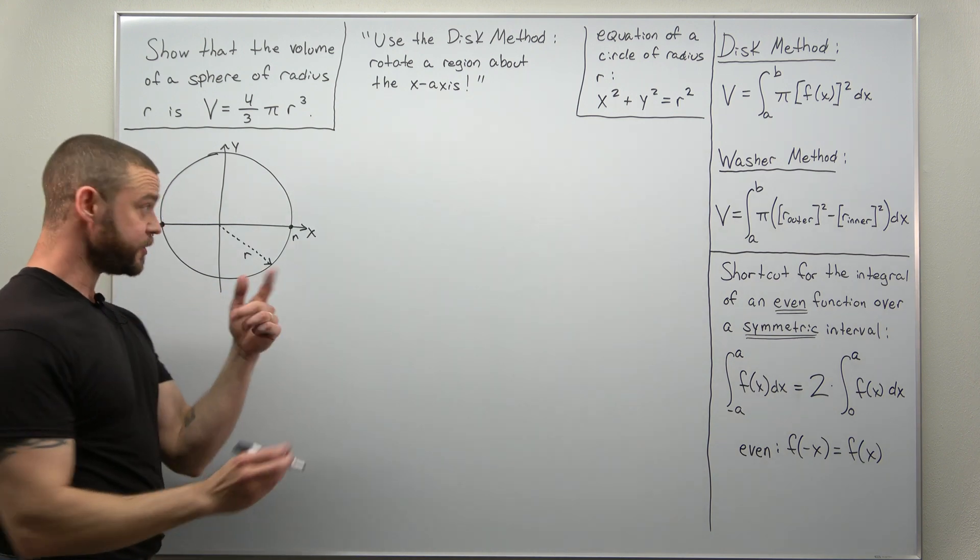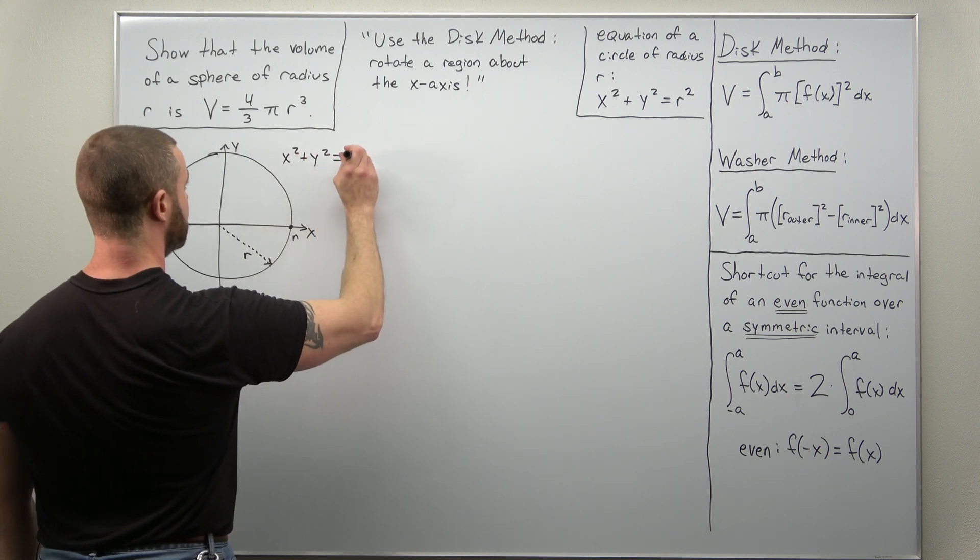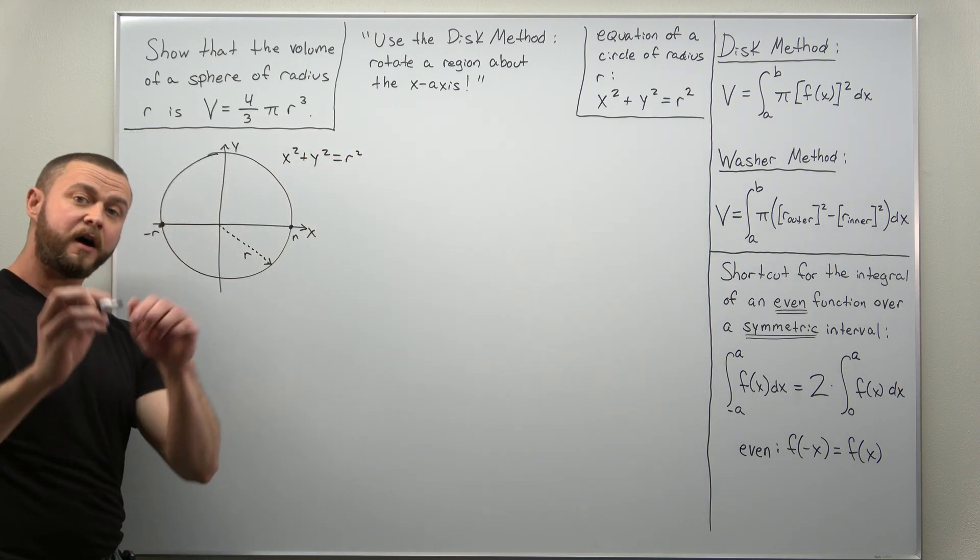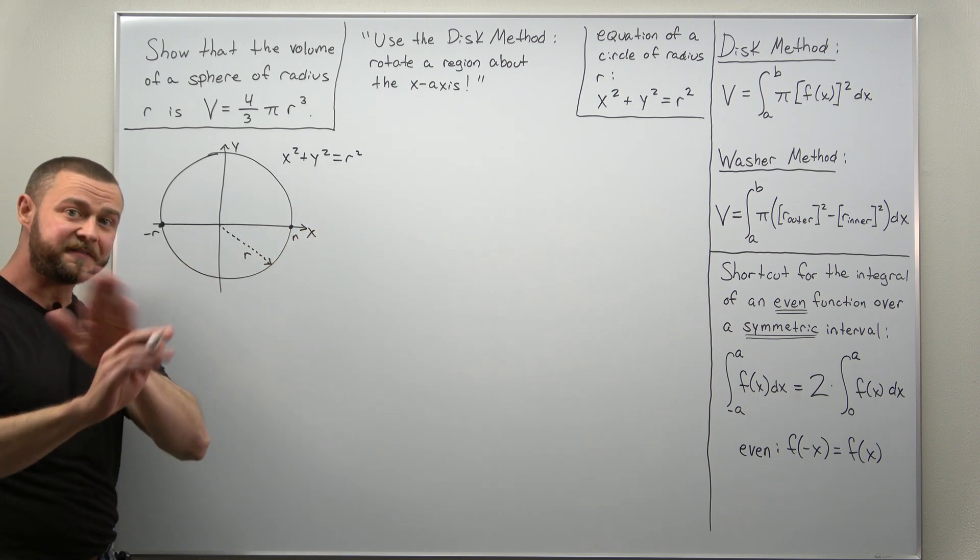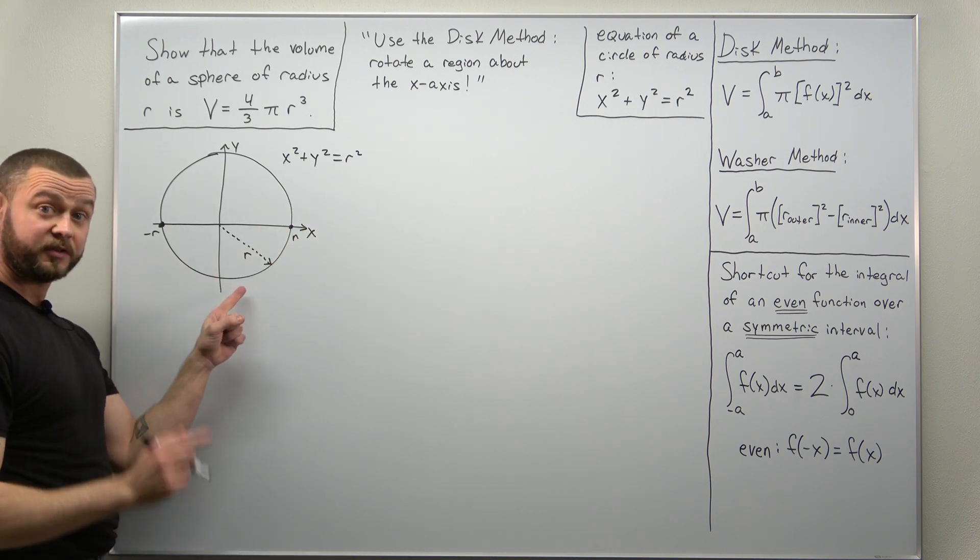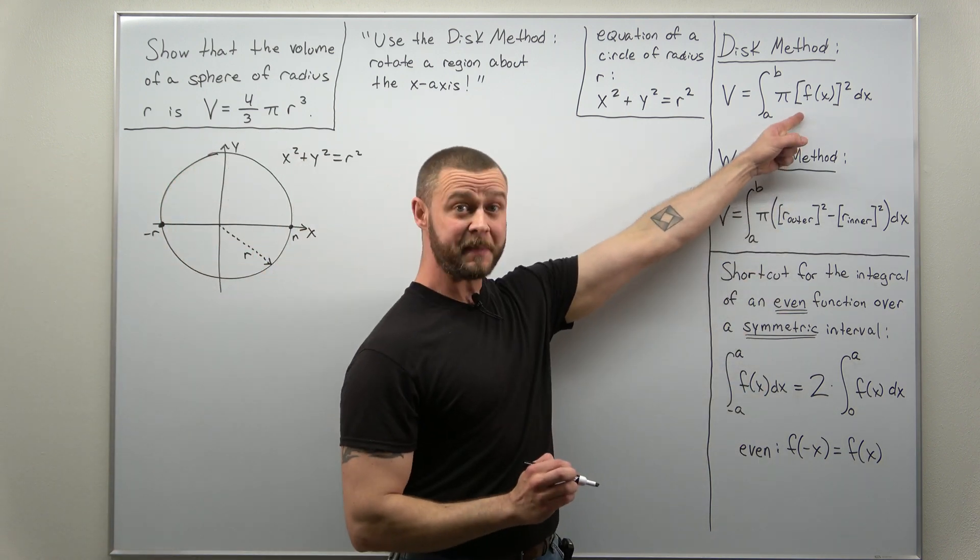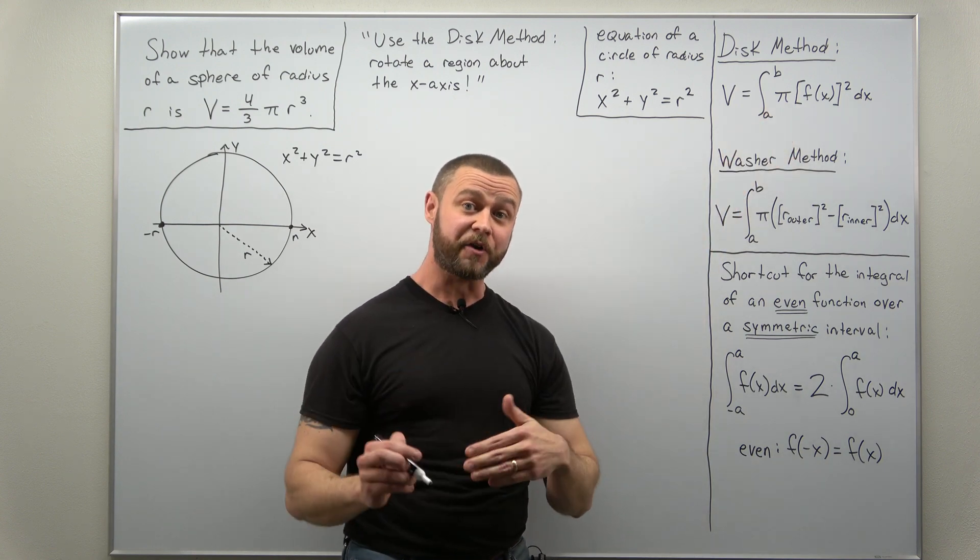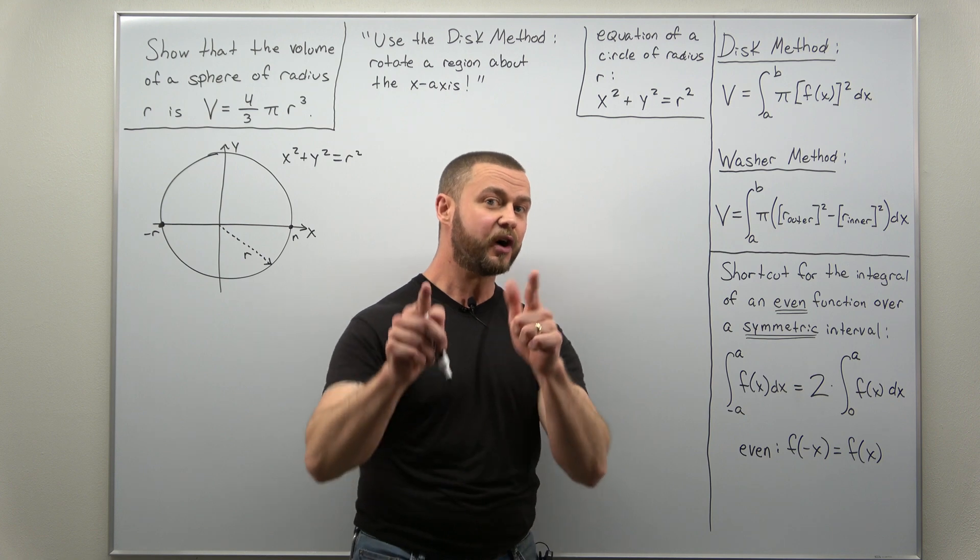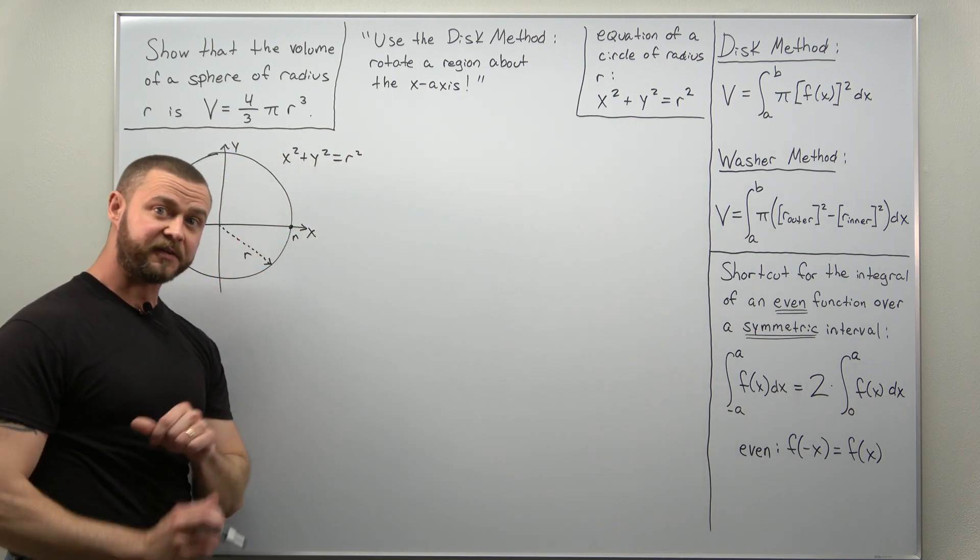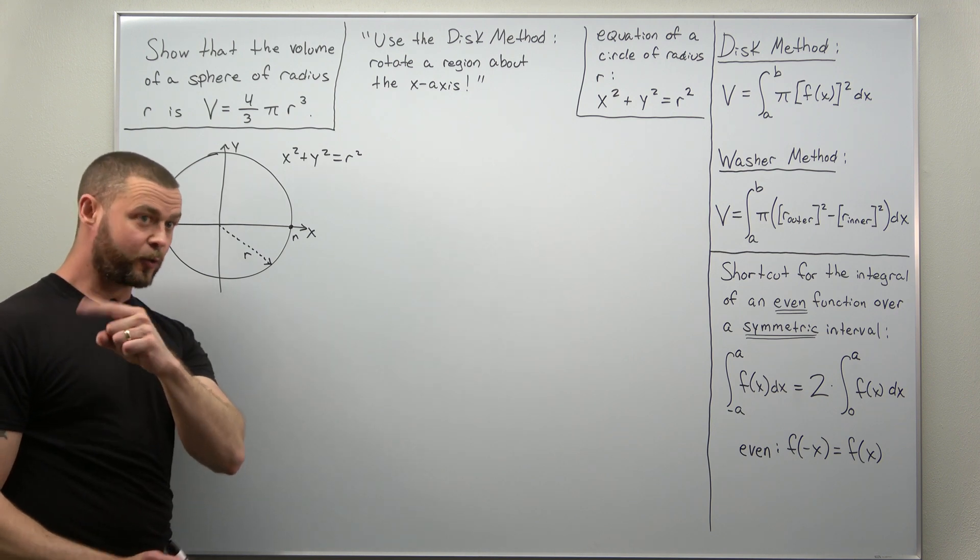All right, now with your equation here of this circle x squared plus y squared equals r squared, unfortunately this equation by itself does not define a function because the curve here fails the vertical line test. In order to apply the disk method formula you have to integrate a function of x. In other words we're going to try to solve this equation for y as a function of x. So let's go through that, solving that equation for y.